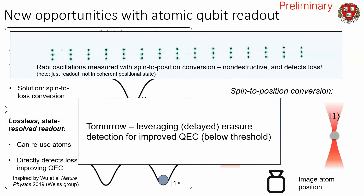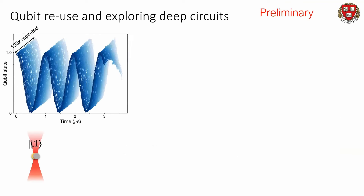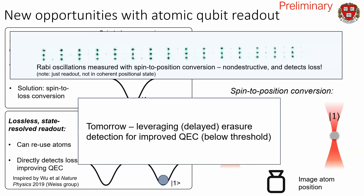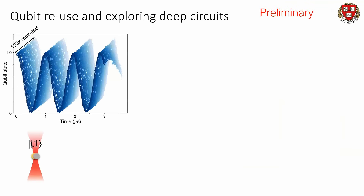One aspect of this technique is that it allows us to improve our error correction. Another aspect is we can now reuse our atoms and don't have to rebuild our array every time we do quantum circuits. Typically we initialize our atoms and then do a single Rabi oscillation. Now we can repeat this Rabi oscillation a hundred times in a row before reinitializing our array, greatly improving our cycle rate — not three Hertz, but a hundred-plus Hertz.